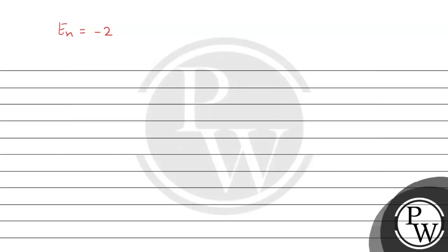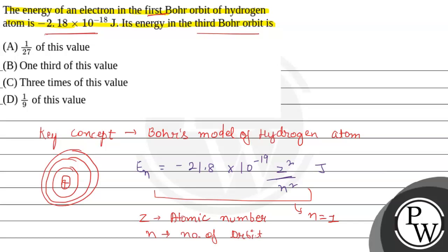So E1 = -21.8 × 10^-19 joules. According to the given question, this has been rearranged and given as -2.18 × 10^-18 joules. This is the given value.